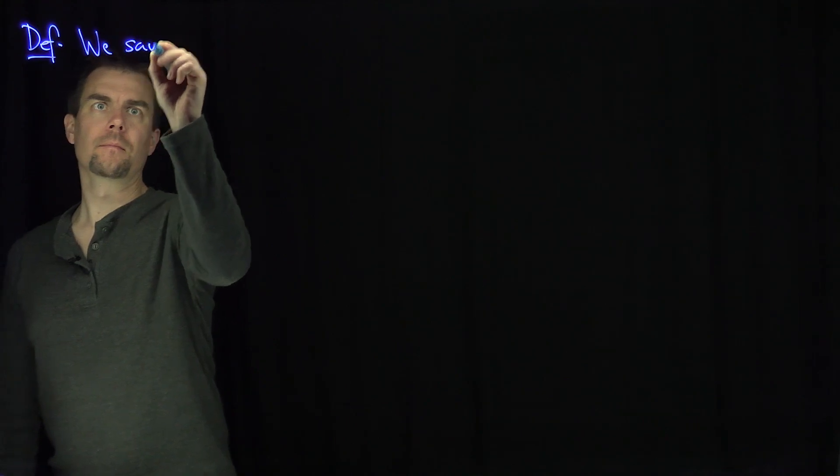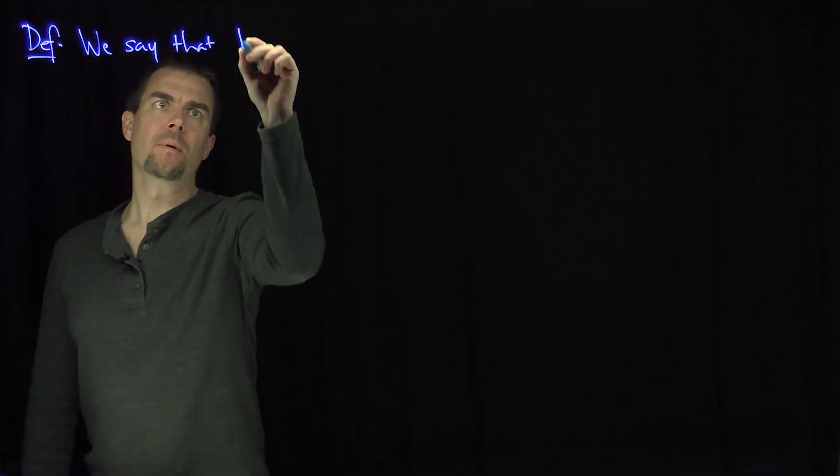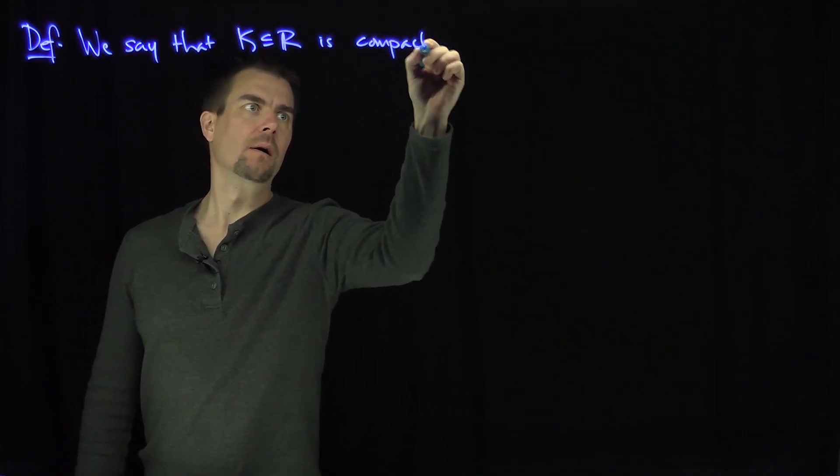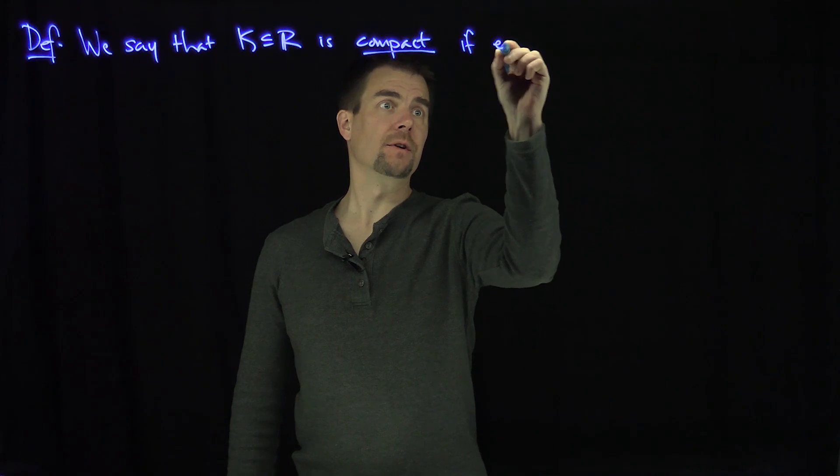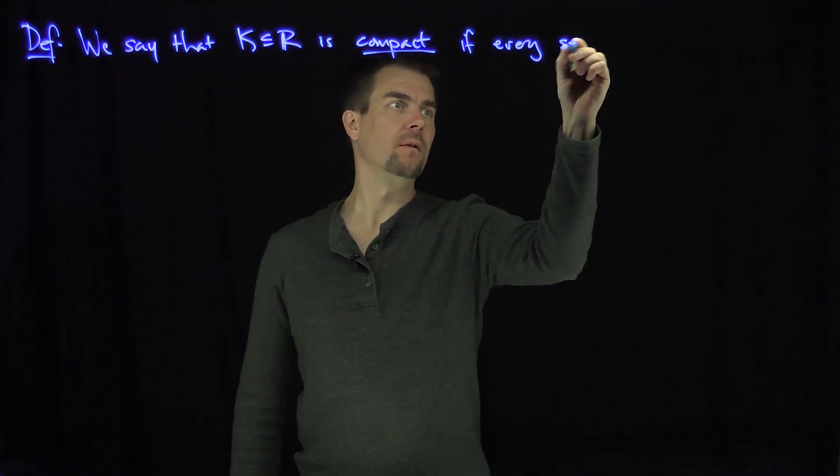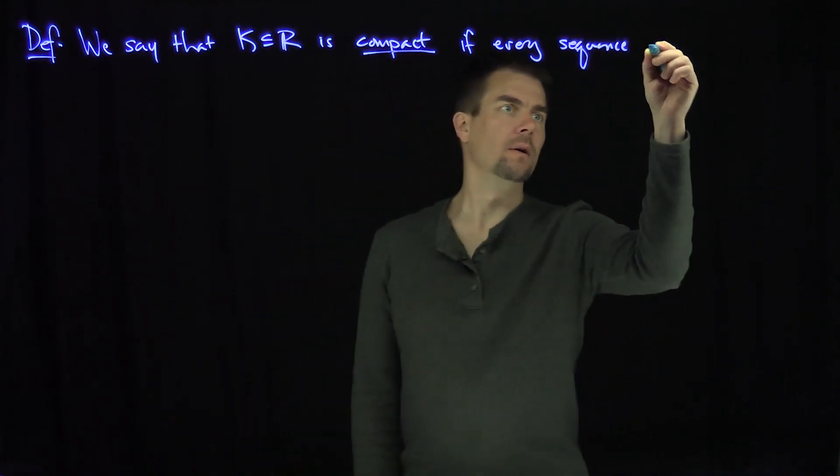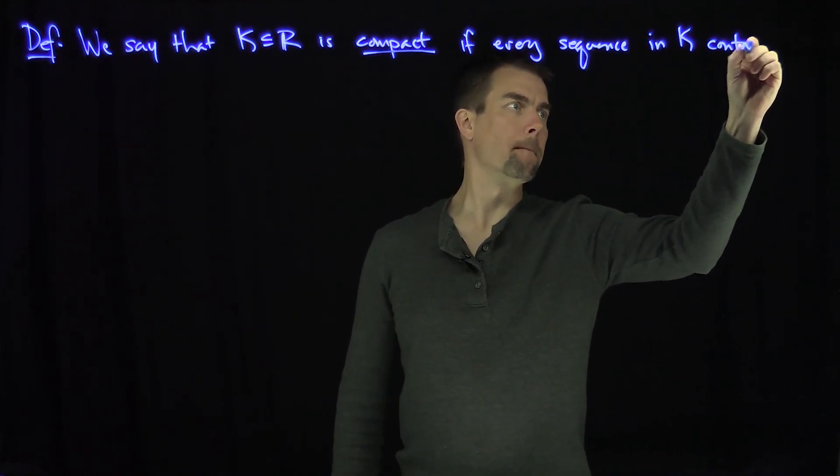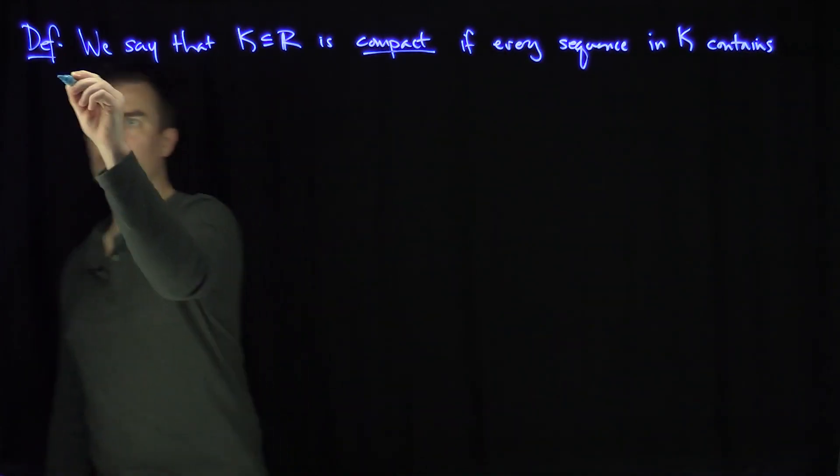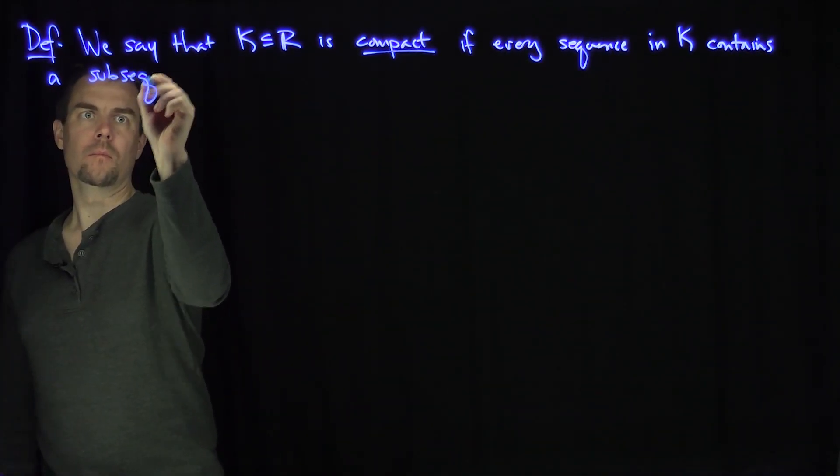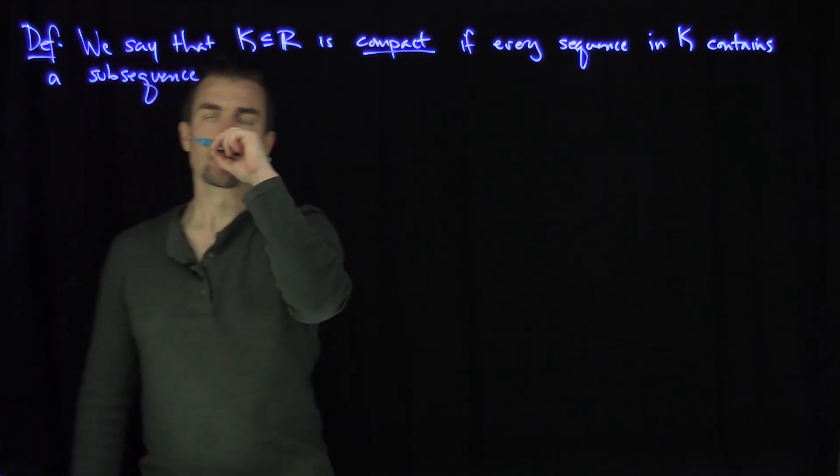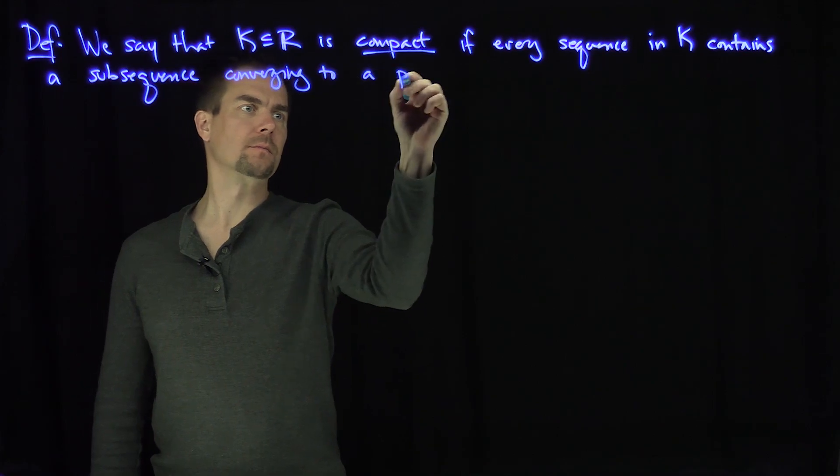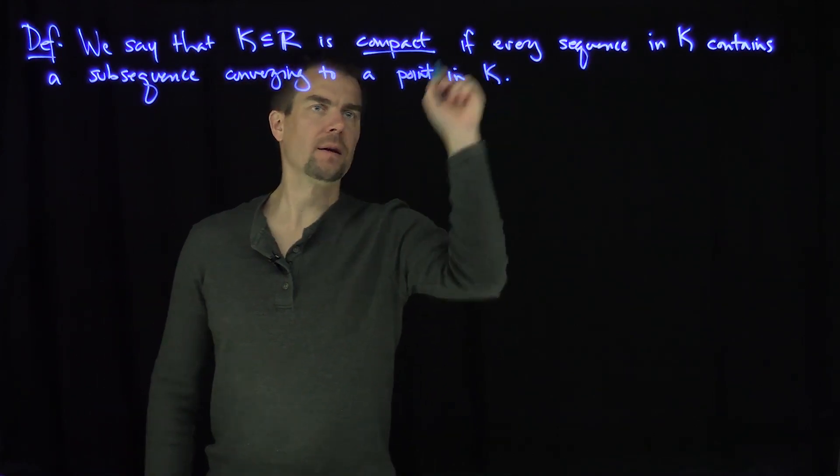We say that k, a subset of r, is compact if every sequence in k contains a subsequence converging to a point in k.